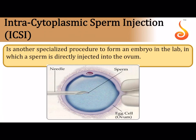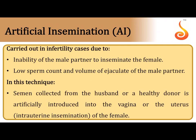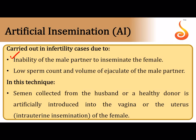Intracytoplasmic Sperm Injection (ICSI) involves holding the egg with a large micropipette using suction and literally injecting the sperm directly into the cytoplasm of the egg using a thin micro-syringe, ensuring the sperm and egg form a zygote. Artificial Insemination (AI) is carried out when the male partner is unable to inseminate the female, or has very low sperm count or low semen volume. Semen collected from the husband or a donor is introduced into the vagina or directly into the uterus — when introduced into the uterus it is called IUI (Intrauterine Insemination). This completes the synopsis of human reproduction and reproductive health.